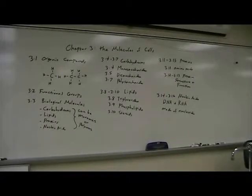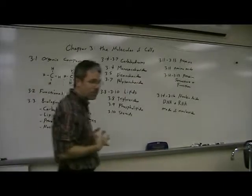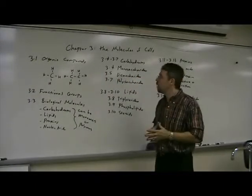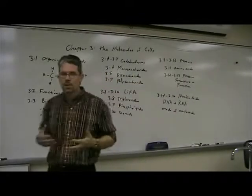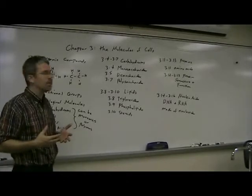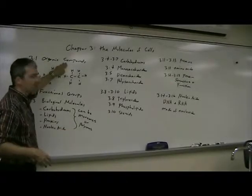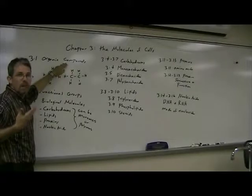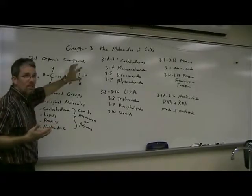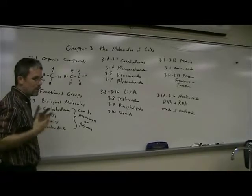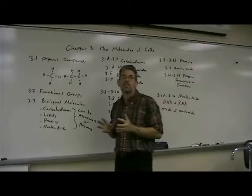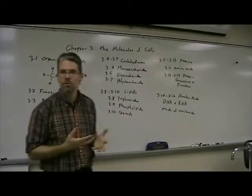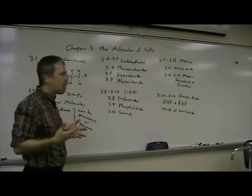Chapter 3 is on the molecules of cells. The course doesn't stress chemistry, but you have to at least know a little bit of it to understand some aspects of biology. Besides water, most of the rest of the body is made of organic material — that is, carbon-based. An organic compound is a compound made of mostly carbon with other things attached to it. Carbon can form four covalent bonds, so a bunch of carbons can be put together in a huge variety of ways, hence the complexity of molecules.